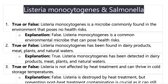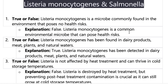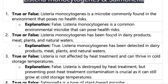The first question: Listeria monocytogenes is a microbe commonly found in the environment that poses no health risk. The answer is false. Listeria is a common environmental microbe that can pose health risks — that's why we study it and why it's important in the food industry. Question two: Listeria monocytogenes has been found in dairy products, meat plants, and natural water — yes, they are detected in all of those.